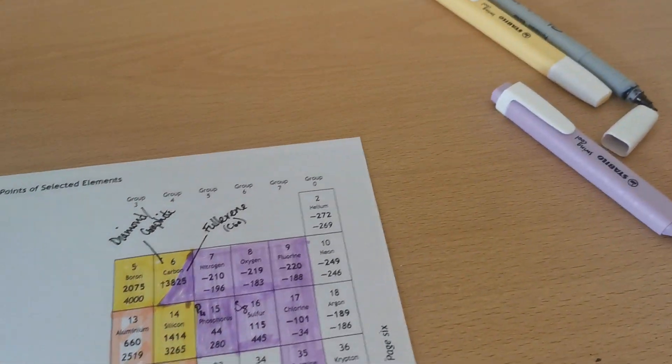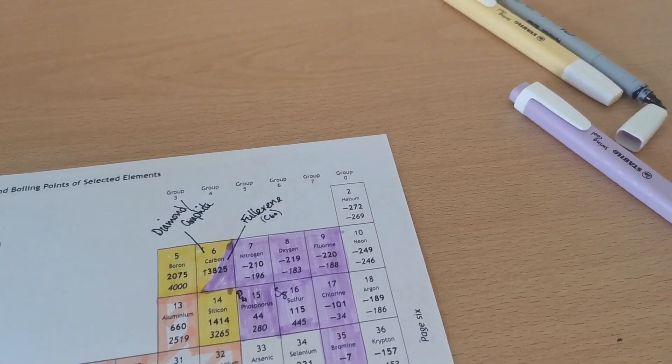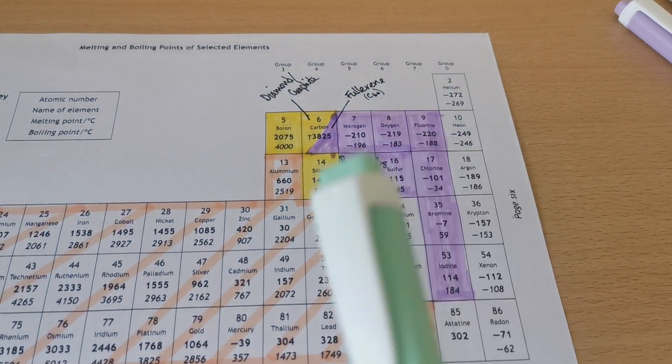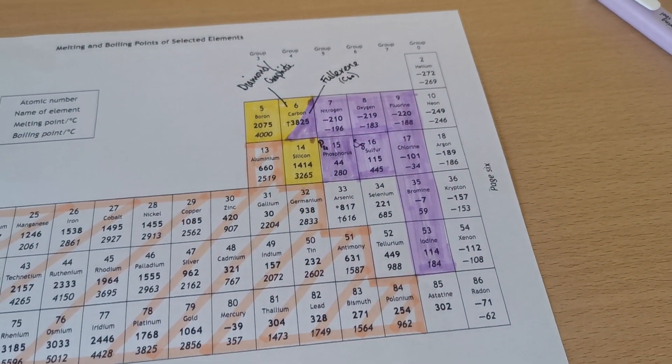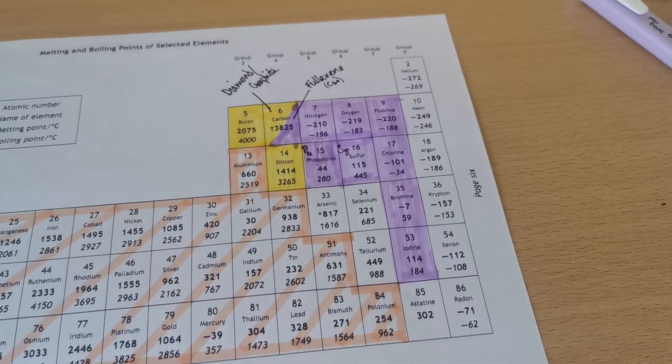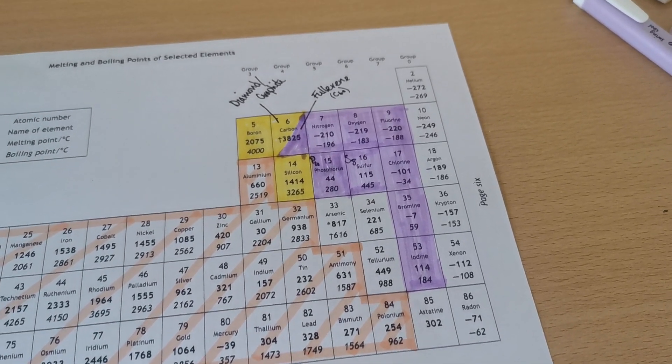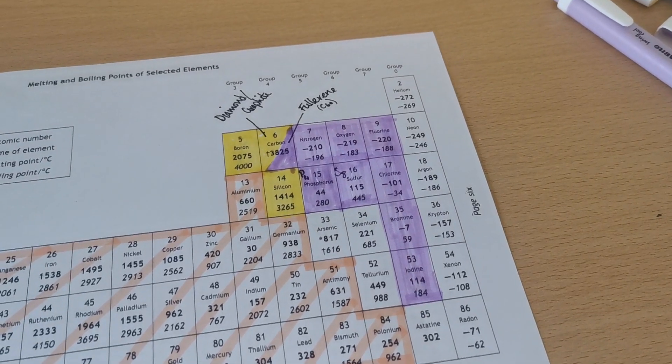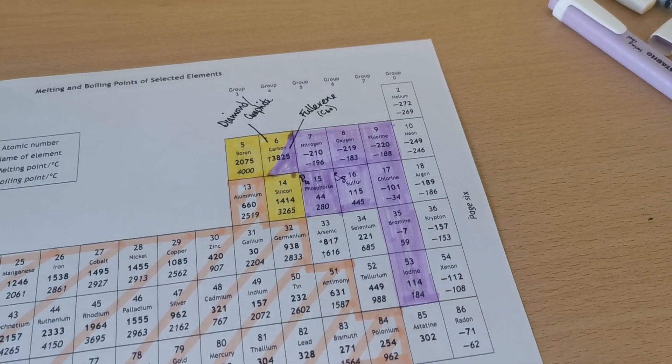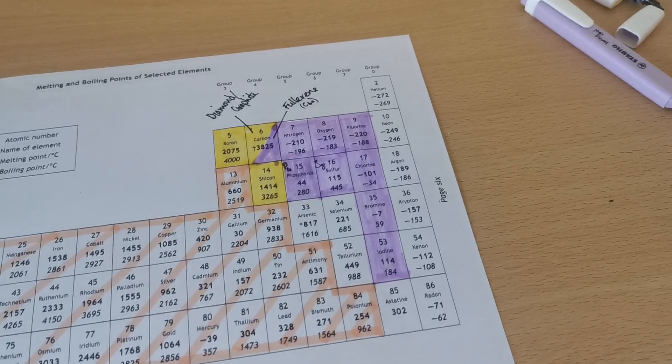The last structure is one you learned about in National 5. I'm going to take a different colour. That is monoatomic. That means it's just a single atom. It's not joined to anything. And as we know, that's the noble gases because they don't form any bonds because they have stable electron arrangements already. So I'm going to take my last colour and colour in the noble gas column.